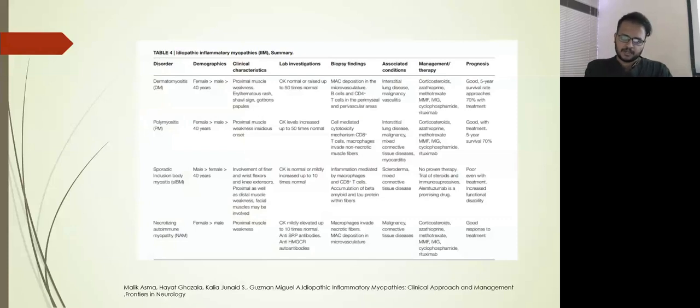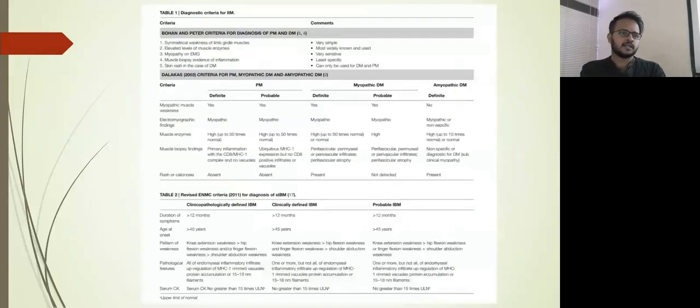Idiopathic inflammatory myopathies - a brief summary: dermatomyositis, polymyositis, sporadic inclusion body myositis, and necrotizing autoimmune myopathy. Diagnostic criteria: Bohan and Peter criteria is usually used - symmetrical weakness of limb girdle muscles, elevated muscle enzymes, myopathy on EMG, muscle biopsy showing evidence of inflammation, and skin rash in case of dermatomyositis.